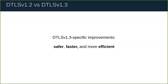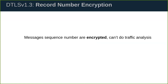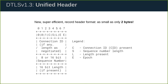There are also DTLS-specific improvements in version 1.3. First, message sequence numbers are now encrypted, protecting against traffic analysis. Second, the record header was redesigned — a super-efficient header can be shrunk to just two bytes, reducing per-message overhead significantly.